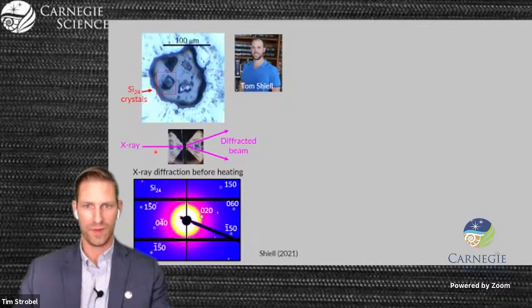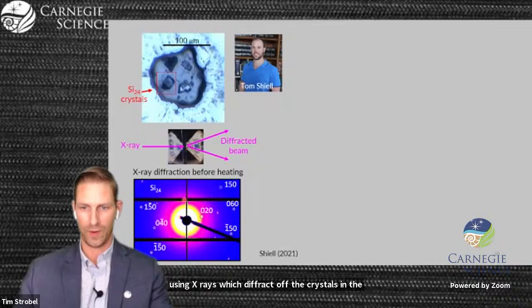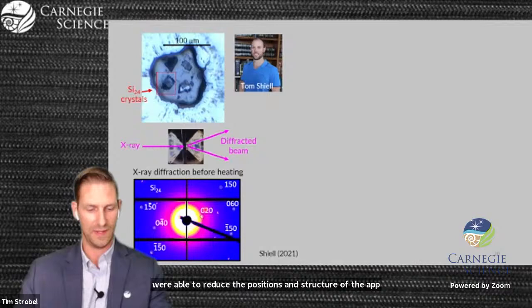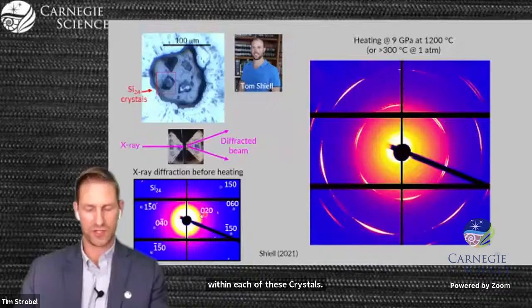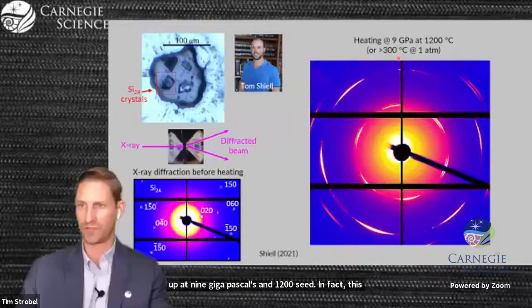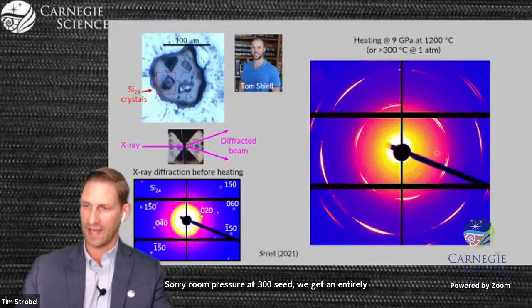Once the samples are loaded, we're able to probe them using x-rays, which diffract off the crystals in the sample and give a fingerprint of the crystal structure. We treat silicon-24 under different pressure temperature conditions, and when we heat this material up at 9 gigapascals and 1200 C, in fact this process works at room pressure at 300 C, we get an entirely different x-ray diffraction pattern, indicating that we formed a different structure.